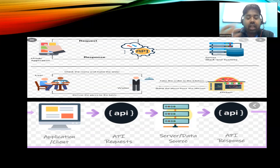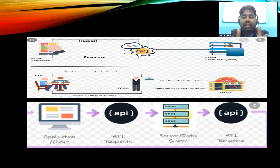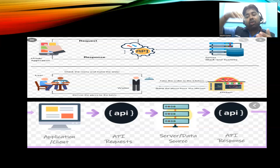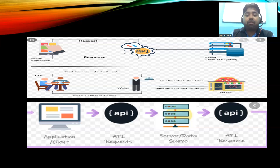Here is a restaurant analogy: the user checks the menu and makes an order. In the middle is the waiter — the waiter is your API. The waiter goes to the kitchen and tells the people who are making the food. They prepare the food, the waiter delivers it to your table. The kitchen preparing the food — that is your server.